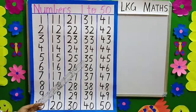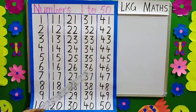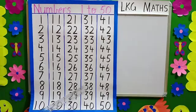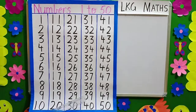3, 5 — 35. 3, 6 — 36. 3, 7 — 37. 3, 8 — 38. 3, 9 — 39. 4, 0 — 40.